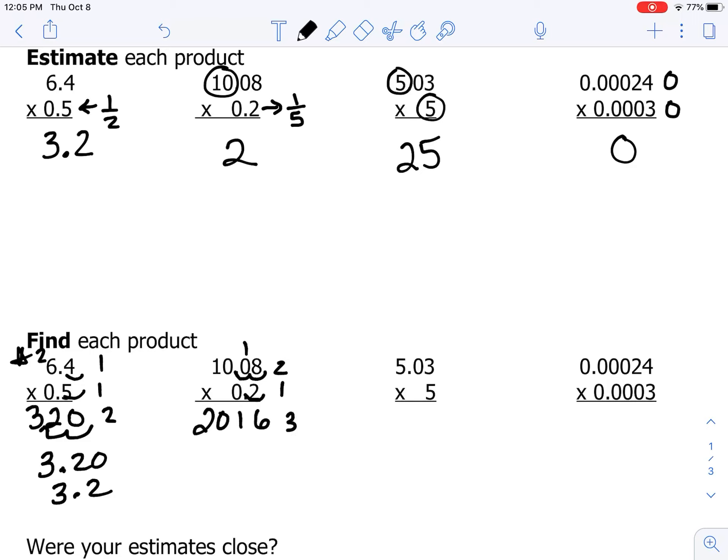We're going to count the place values of the factors. There's 2 in the top number, 1 in the bottom. That means we need 3 altogether in the product. So we're going to scoop it over 3 times, and my decimal point goes between the 2 and the 0. So we have 2.016.